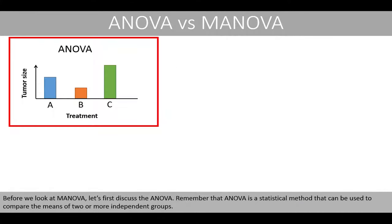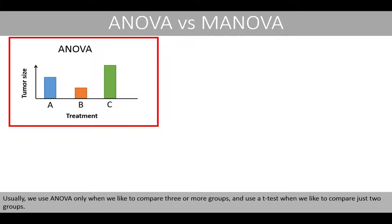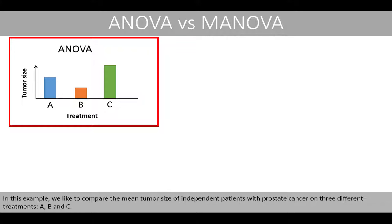Before we look at MANOVA, let's first discuss ANOVA. Remember that ANOVA is a statistical method that can be used to compare the means of two or more independent groups. Usually we use ANOVA only when we like to compare three or more groups, and use a t-test when we like to compare just two groups. In this example we like to compare the mean tumour size of independent patients with prostate cancer on three different treatments: A, B, and C.